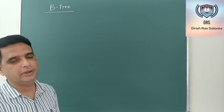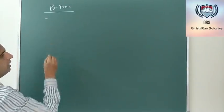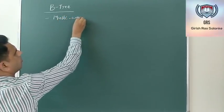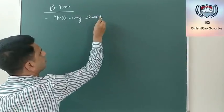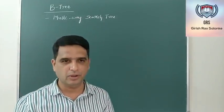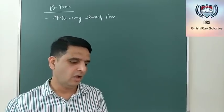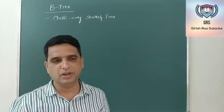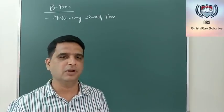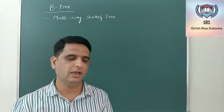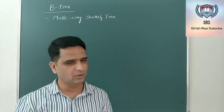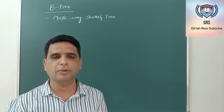Coming to the definition of a B-tree: the first point to be noted is a B-tree is a multi-way search tree. I hope all of you are familiar with what a search tree means — in a search tree, all keys greater than the information stored in a node will be to the right side, and all keys lesser than the information stored in a node will be to the left. This property that holds for a binary search tree will also be there for a B-tree; a B-tree must have the property of a search tree.